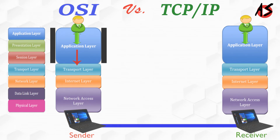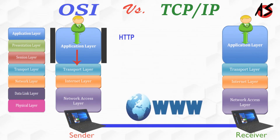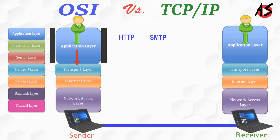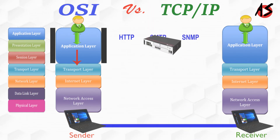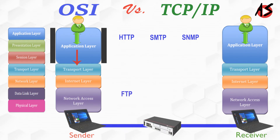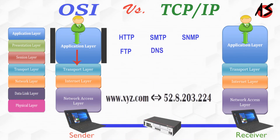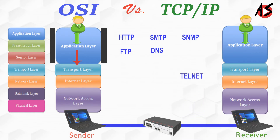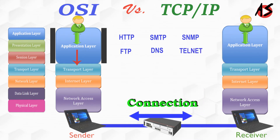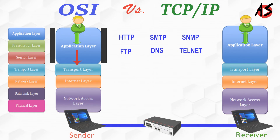When one application layer protocol wants to communicate with another application layer, it forwards its data to the transport layer. Various protocols are used in the application layer: HTTP to access data over the World Wide Web, SMTP for email transfer, SNMP for managing devices on the internet, FTP for transmitting files from one computer to another, DNS maps names to addresses, and Telnet for connection between a local computer and a remote computer.